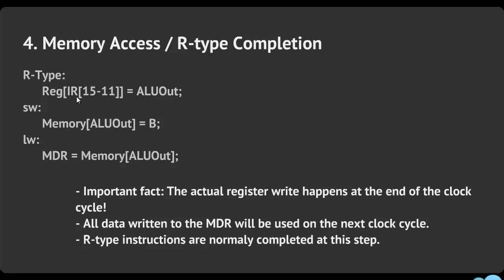You take what you computed in ALU out, put it into RD, and R-type is now complete — A plus B is now stored in RD. For a store word, you've already computed the memory address of where you want to write.